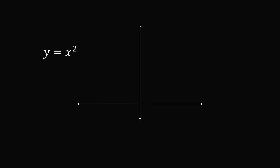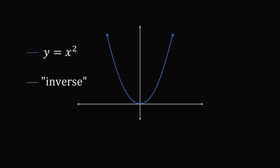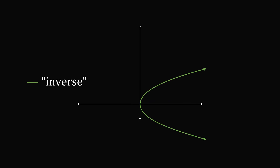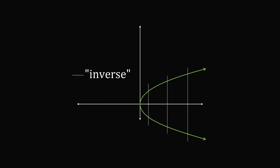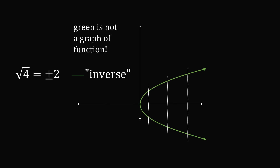Let me give some justification for this convention. Consider the graph of y equals x squared — a parabola where every y value corresponds to two x values. If we try to graph the inverse by reflecting about y equals x, we get a sideways parabola. But this inverse graph would not pass the vertical line test — some x values correspond to two y values — so it is not a function. This would correspond to saying the square root of 4 equals plus or minus 2, but that would not define a function.